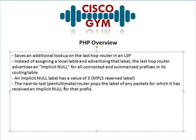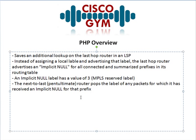The next-to-last hop — which is actually what the word 'penultimate' means, I probably should have told you that a little bit earlier — the next-to-last router pops the label of any packets for which it has received an implicit null for that prefix. Basically, if it gets an implicit null from a neighbor, it knows to pop the label for that prefix. Let's go ahead and jump on the CLI and take a look at this in action.